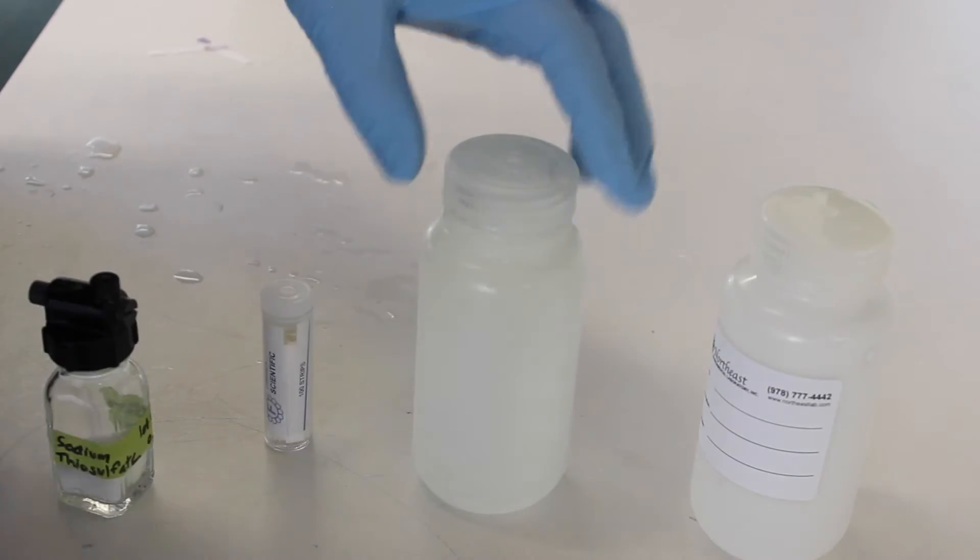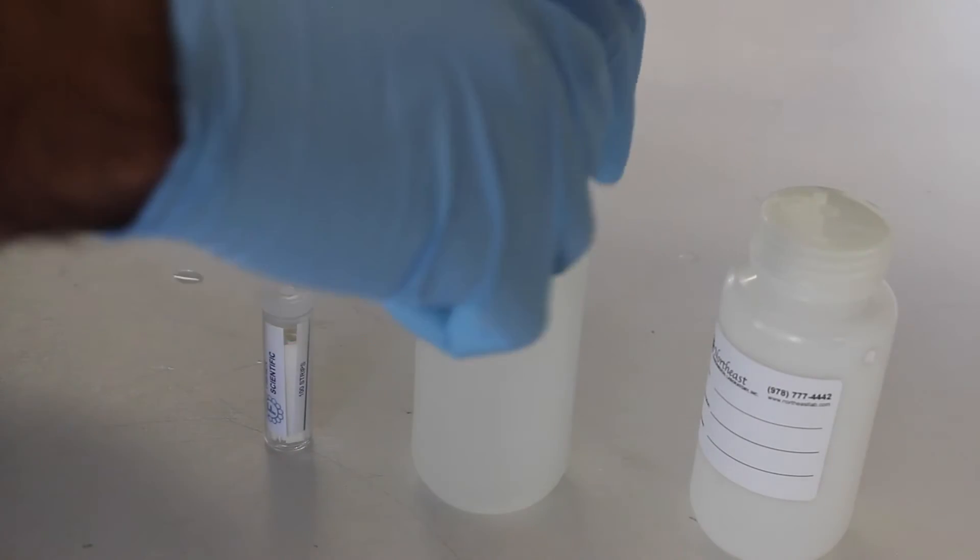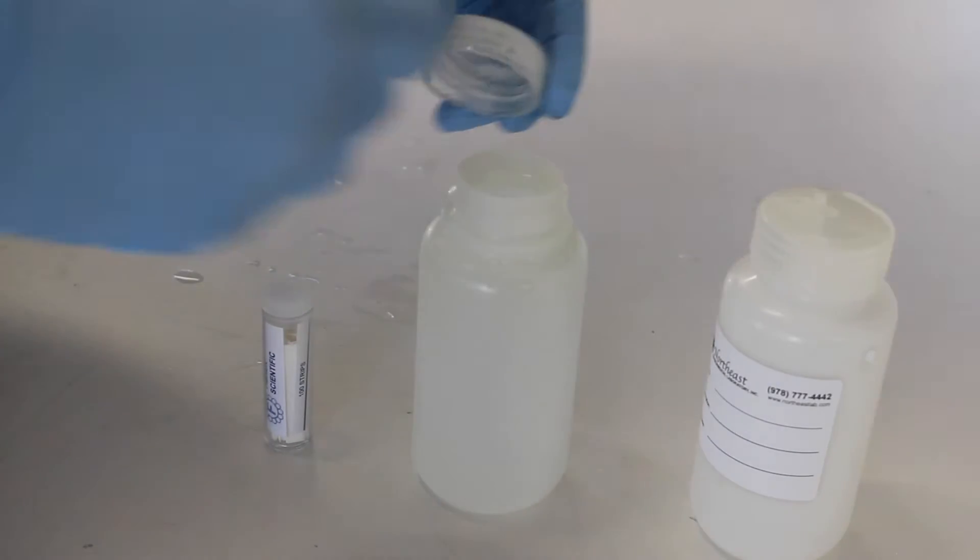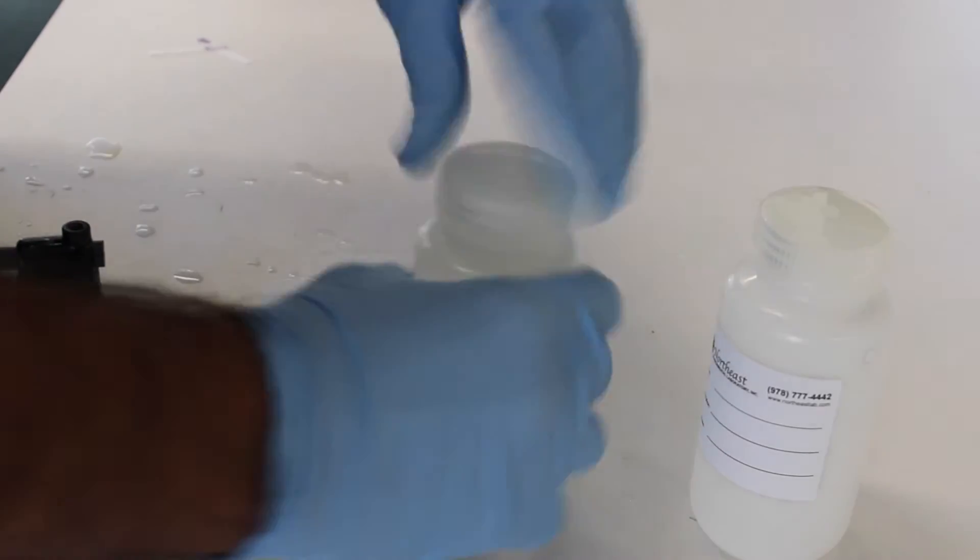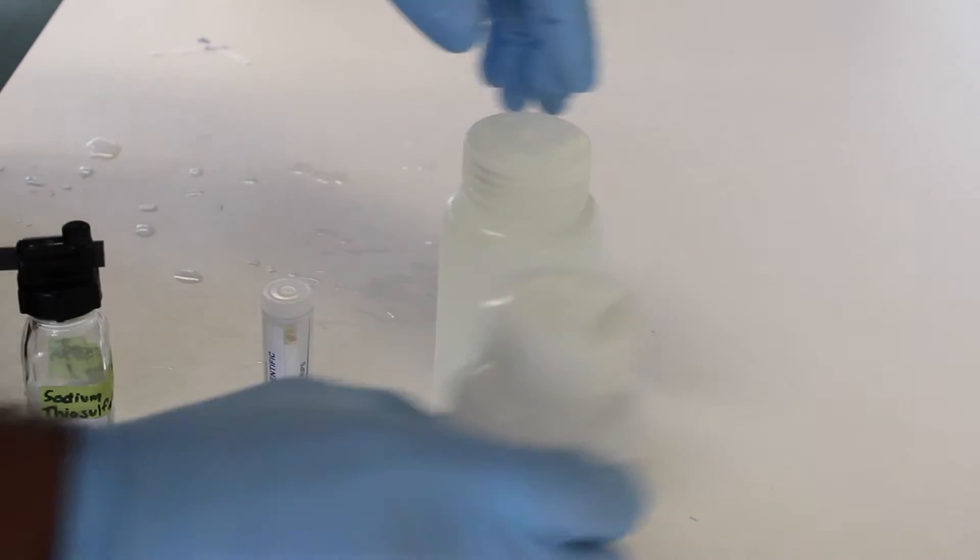At this point, add a final shot of sodium thiosulfate to dissipate any chlorine not detected by the test paper. Mix well and transfer to the sample bottle provided by Northeast Environmental.